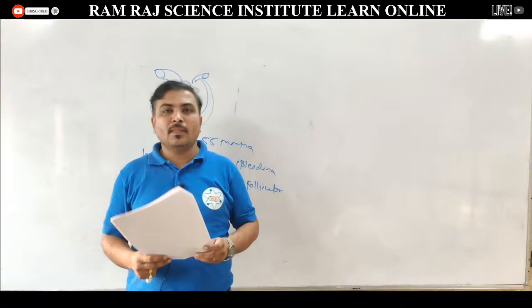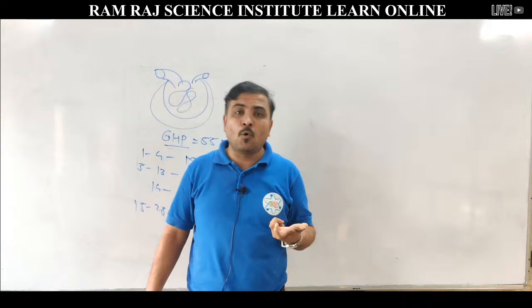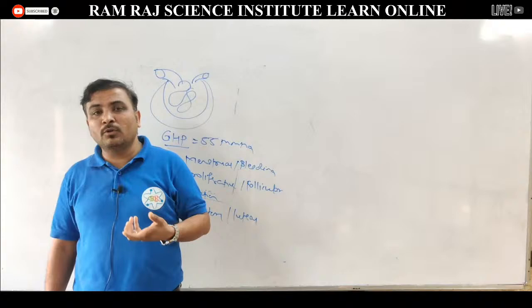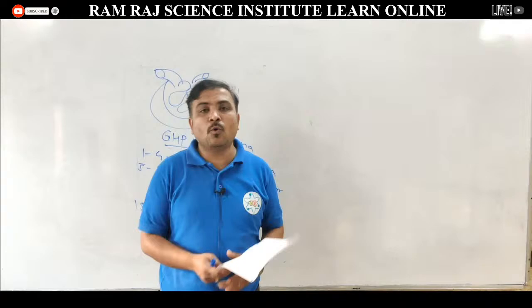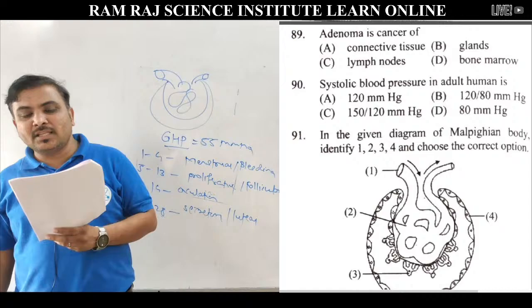Question 89: adenoma is a cancer of. 5 types के cancers: carcinoma (epithelial tissue, 85% of cancers), sarcoma (connective tissue), lymphoma (lymphatic/immune system), leukemia (blood cancer), adenoma (glands). Adenoma is cancer of glands — वही पूछा है. Answer is cancer of glands.